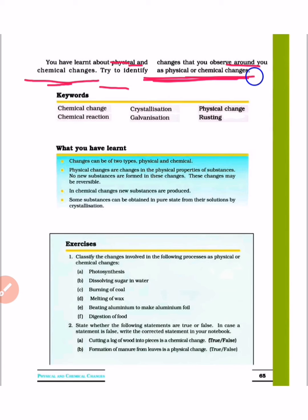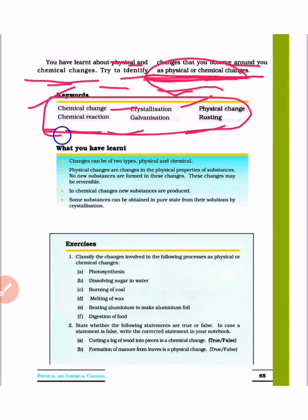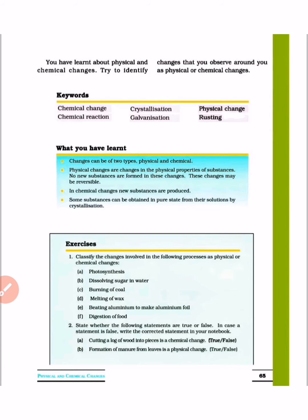We have learned about the physical and chemical changes. I have also told you the differentiation. Next, there are keywords: chemical change, chemical reaction, crystallization, galvanization, physical change, and rusting. Don't forget all these things. These points are important. The chapter is finished here. If the chapter is good, like, share, and subscribe.